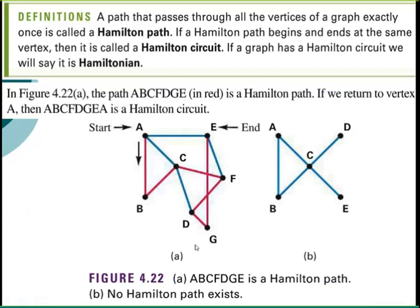A Hamilton path passes through all vertices exactly once. If the Hamilton path begins and ends at the same vertex, then it's called a Hamilton circuit. If a graph has a Hamilton circuit, we say it is Hamiltonian.